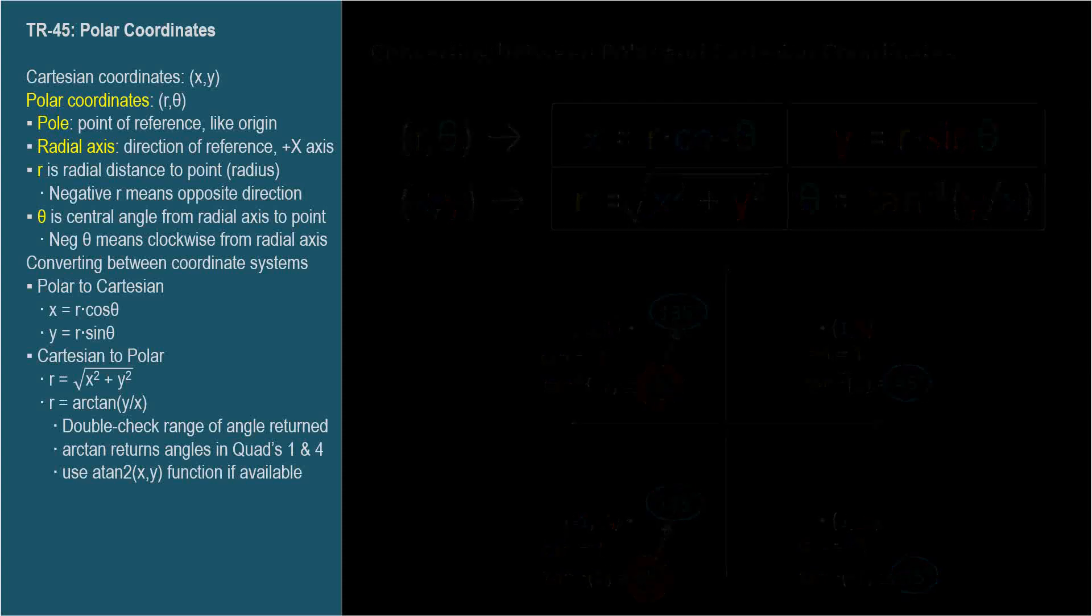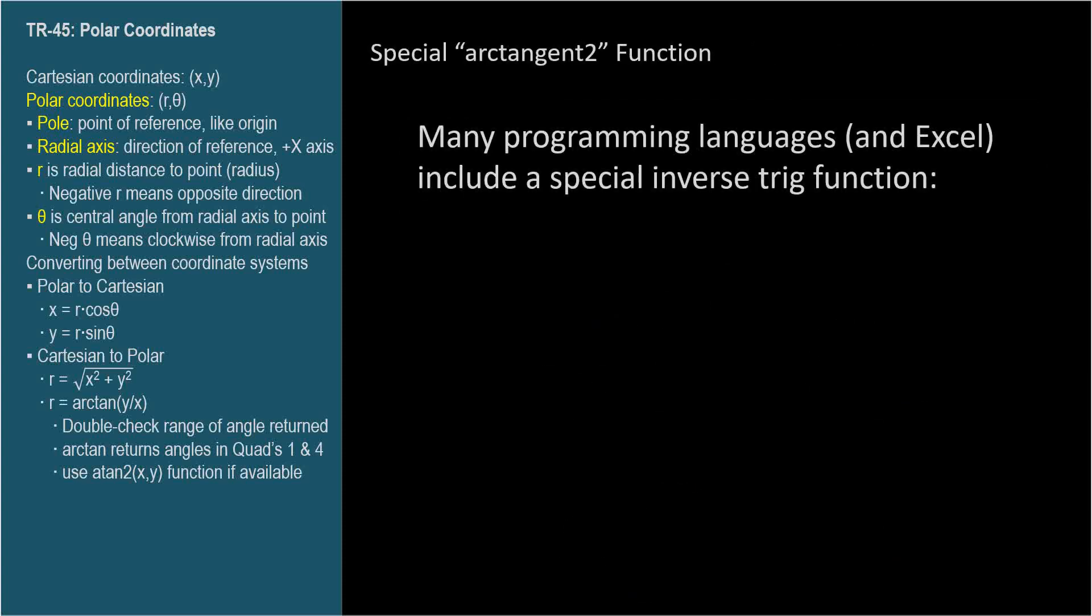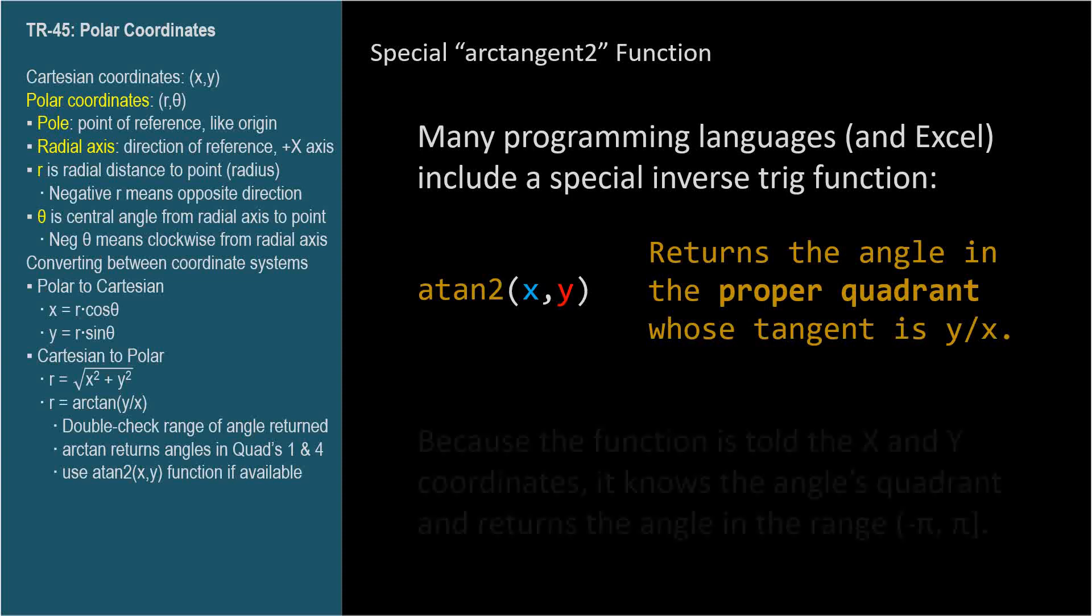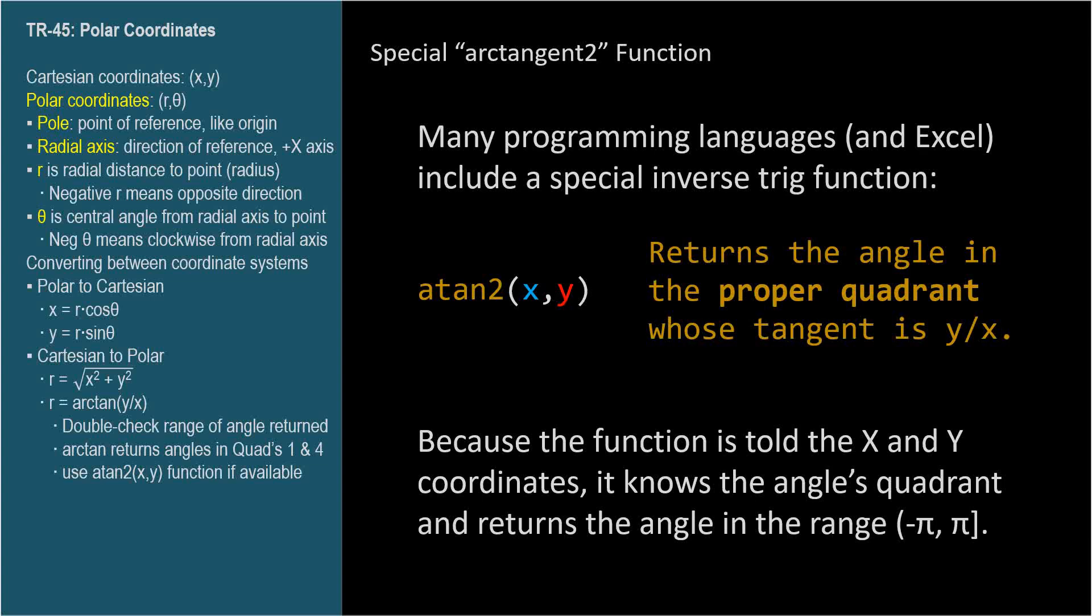Many programming languages include a special arc tangent function, usually called arctan2 or atan2. The 2 is a reminder that the function takes two arguments, the x and y coordinate of the point. So instead of dividing y by x and giving the function this quotient, we give the arctan2 function the distinct x and y coordinates of the point. The function divides y by x and determines the arc tangent of the quotient. Then, because it knows the x and y coordinates, it knows which quadrant contains the angle, and it will return the correct angle in the range -π to π.